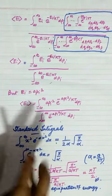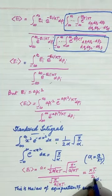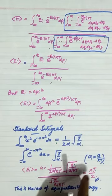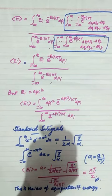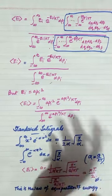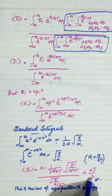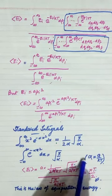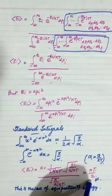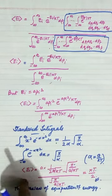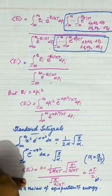Thus, the mean kinetic energy per degree of freedom is KT/2. Multiplying by the degrees of freedom according to the motions possessed by any type of molecule — whether monoatomic, diatomic, or polyatomic — gives the total energy. This completes our derivation of the Law of Equipartition of Energy from statistics. Thank you.